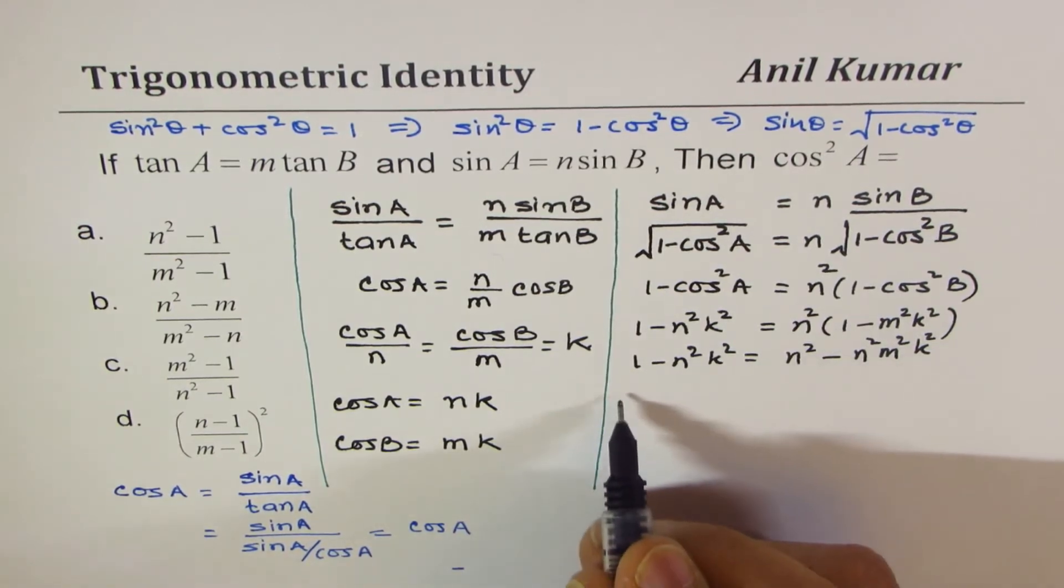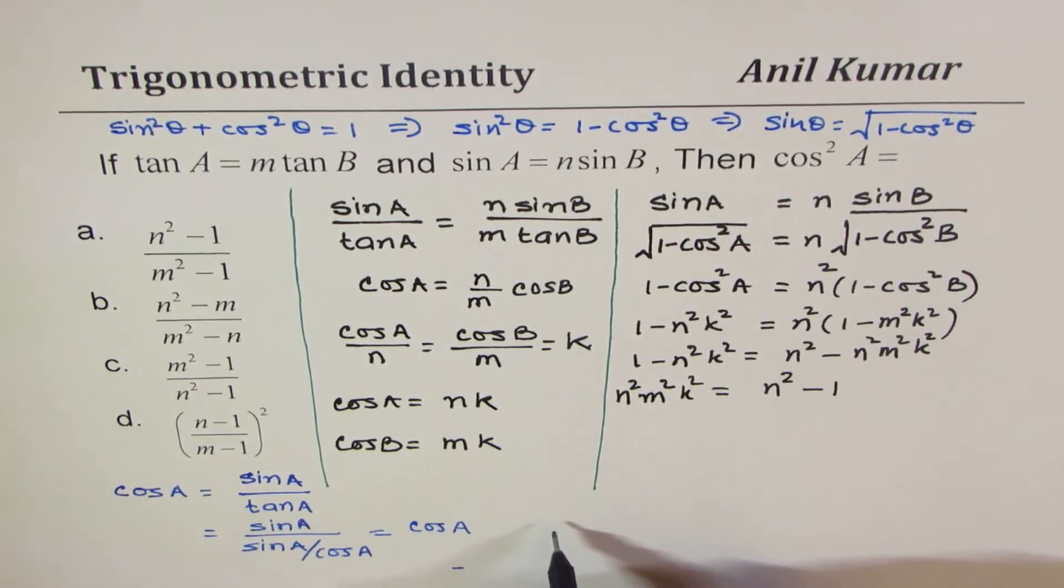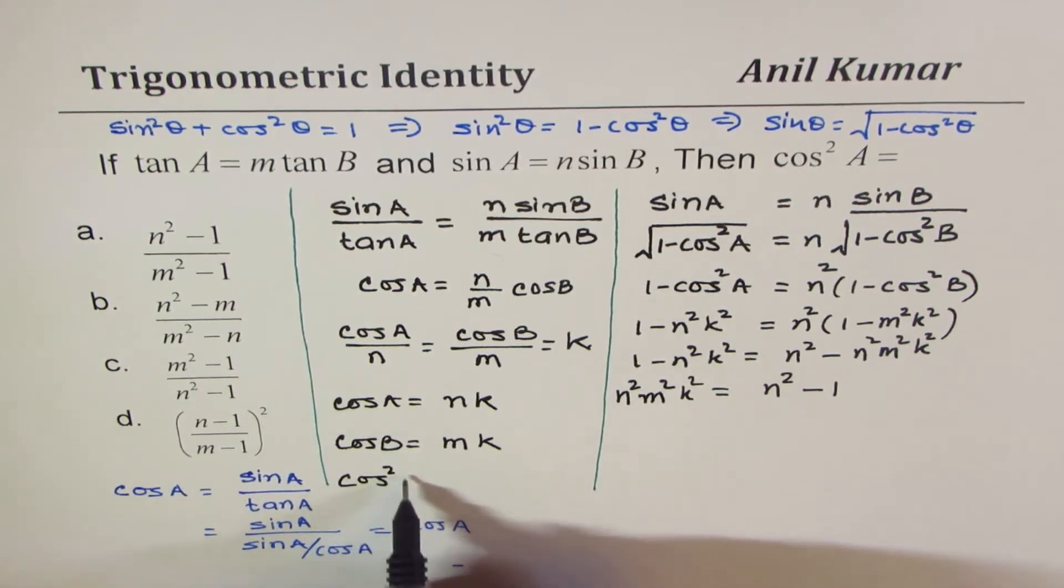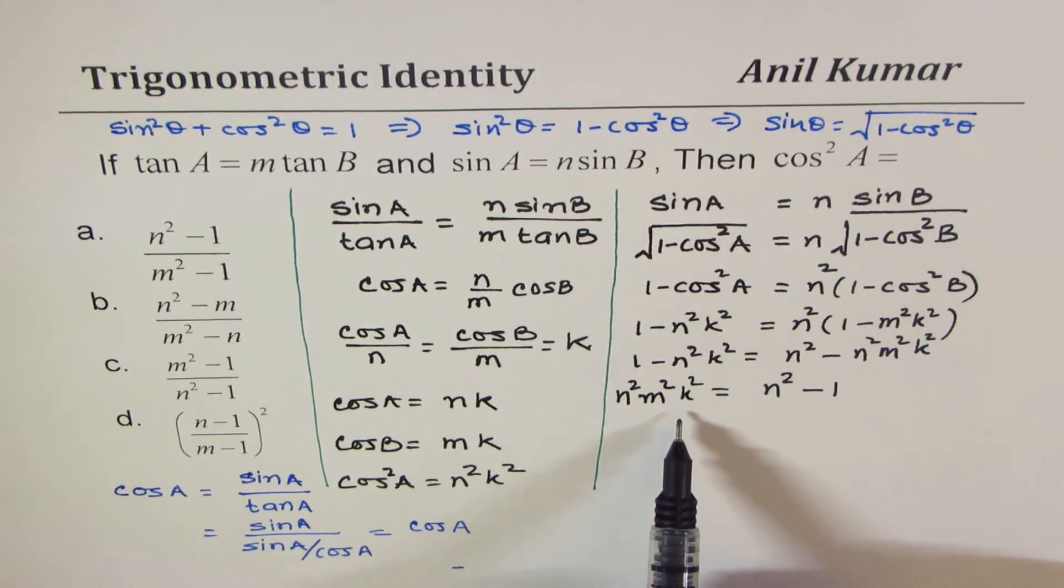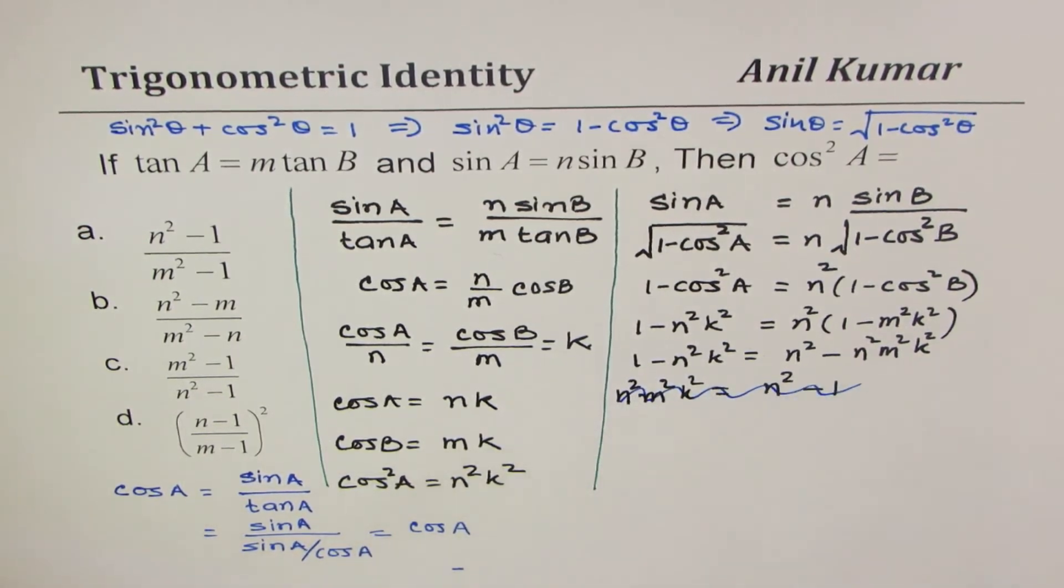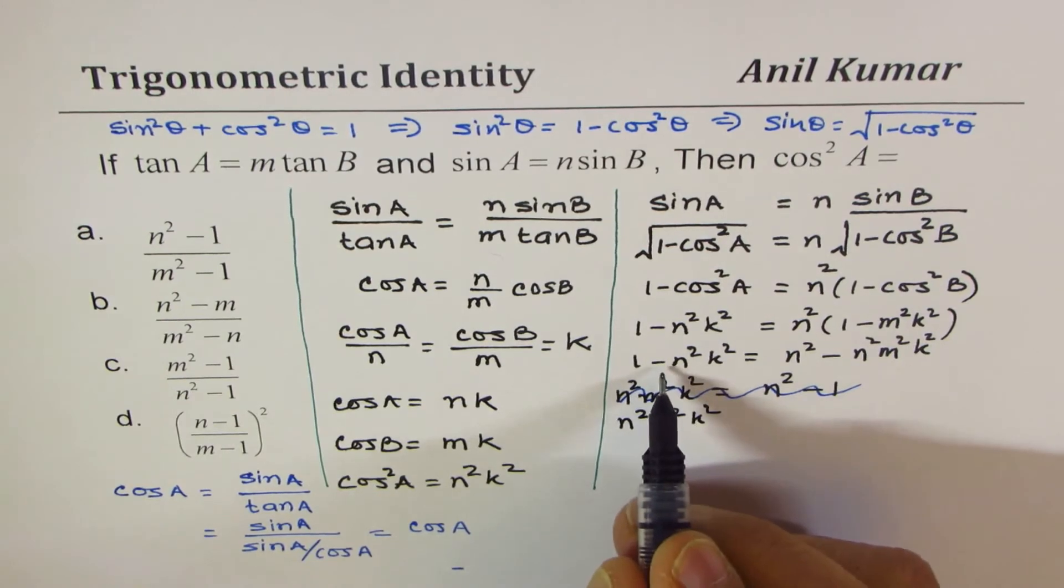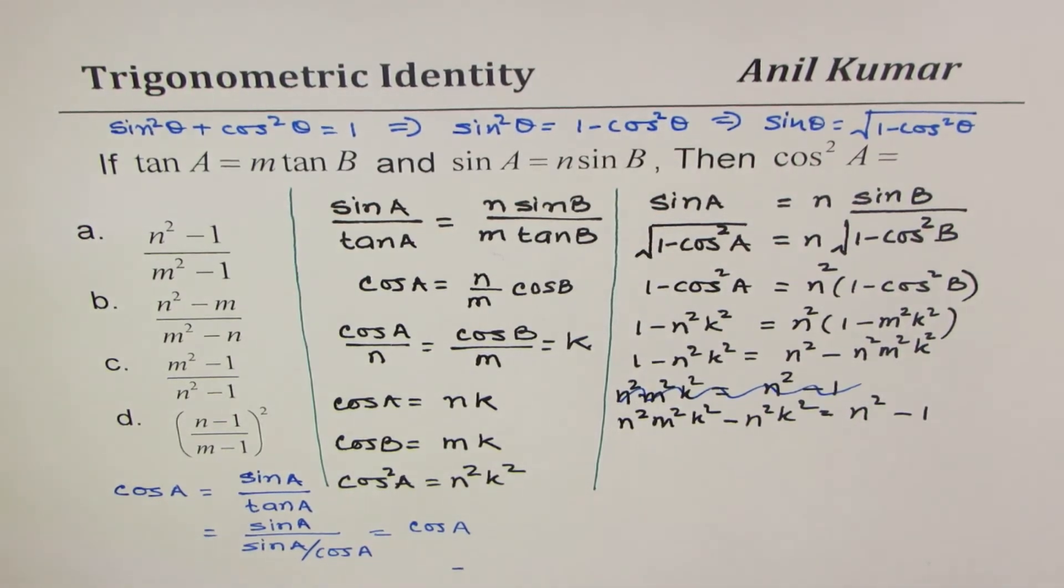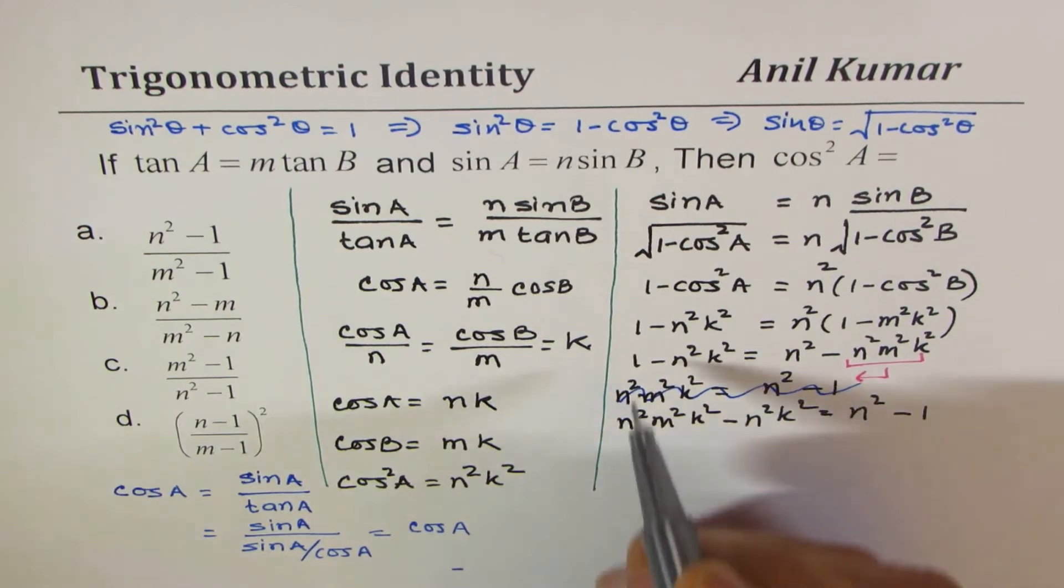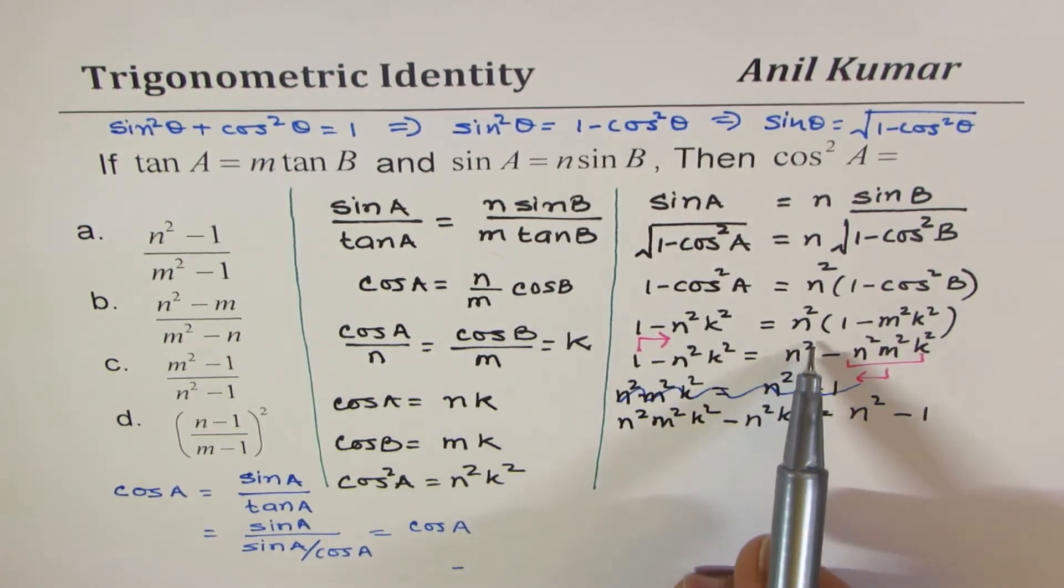Let's bring similar terms together. So we have n square m square k square equals n square minus 1. Now, what is cos square A? Cos square A is n square k square. So you can clearly see that n square k square, I forgot to write this minus. So I'll bring this term to the left, which is n square m square k square, we have minus n square k square and n square minus 1. So what we did was that we brought this term to the left side and brought 1 to the right side. So we're left with this term, n square m square k square minus this, and n square minus.